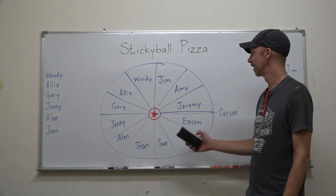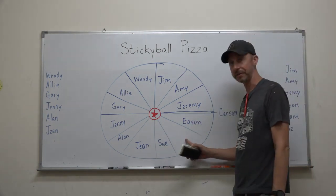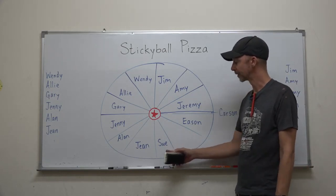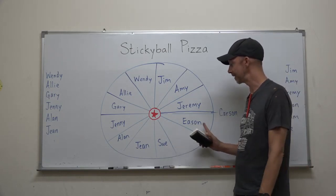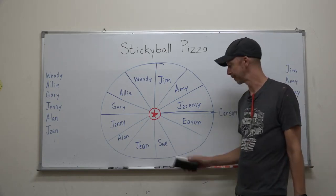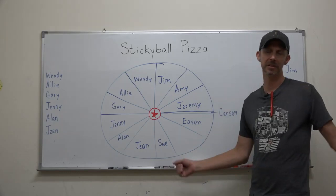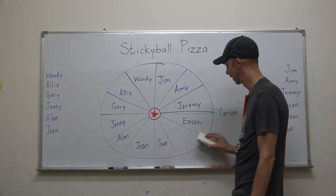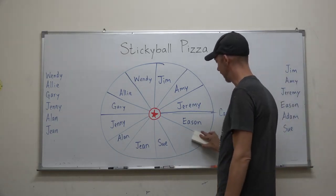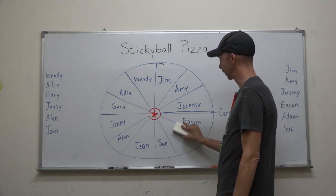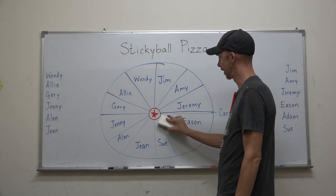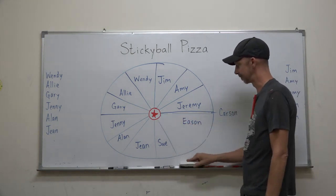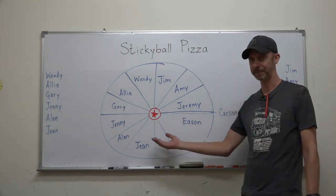What happens to Adam's space? Well, Sue and Eason are going to have to play paper scissors stone. Eason lost, which means we are going to erase this line, and now Eason's slice is much bigger.